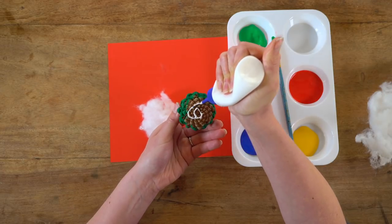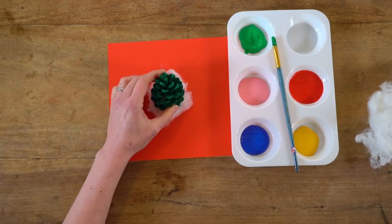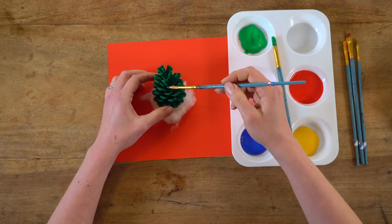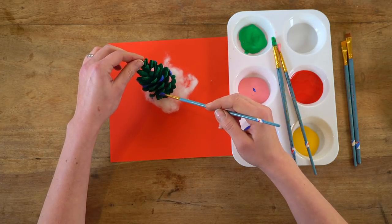Then glue the base of your pinecone and attach it to some old stuffing or cotton wool. Use different colours of paint to create decorations for your tree, like these blue and pink baubles.